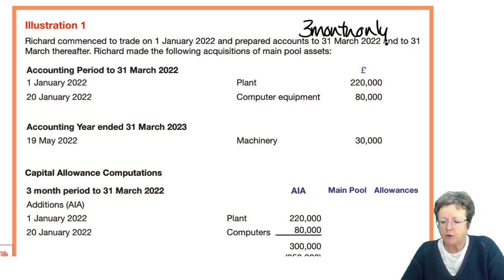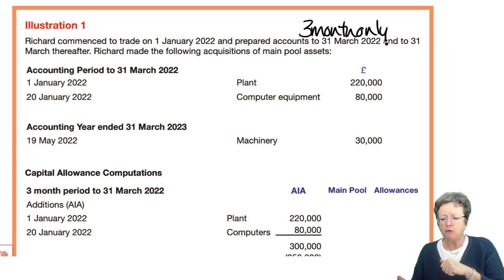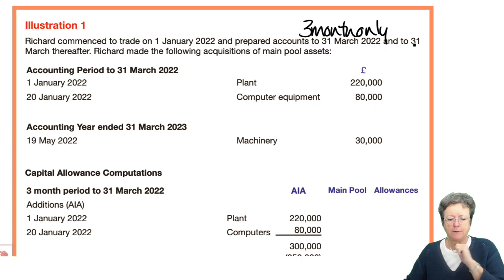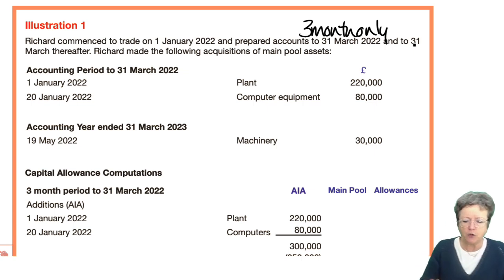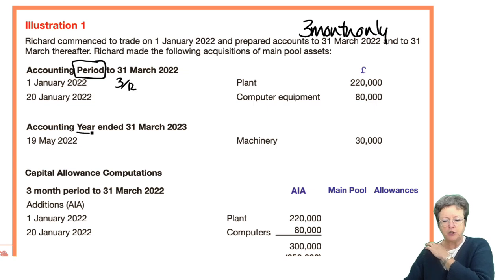On 1st January he bought some plant and machinery for £220,000. On 20th January he bought some computer equipment for £80,000. Then in the following year — which is a 12-month period to March 2023 — he bought some machinery for £30,000.